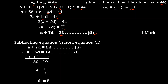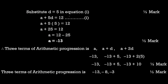Next, subtract equation 1 from equation 2: (a + 7d) − (a + 5d) = 22 − 12. The a terms cancel: 7d − 5d = 2d, and 22 − 12 = 10. So 2d = 10, therefore d = 5.